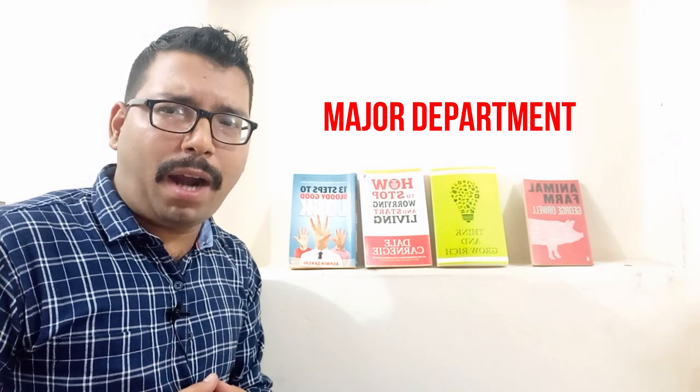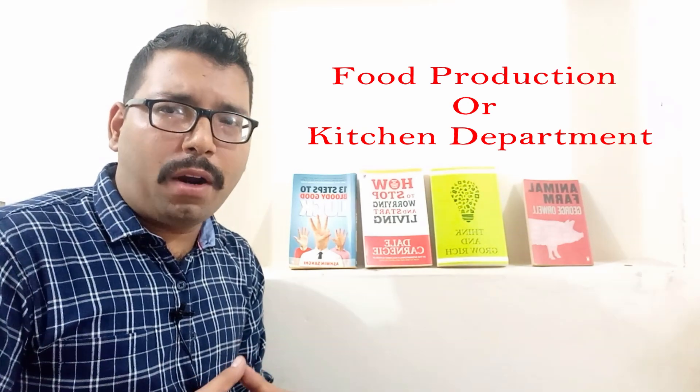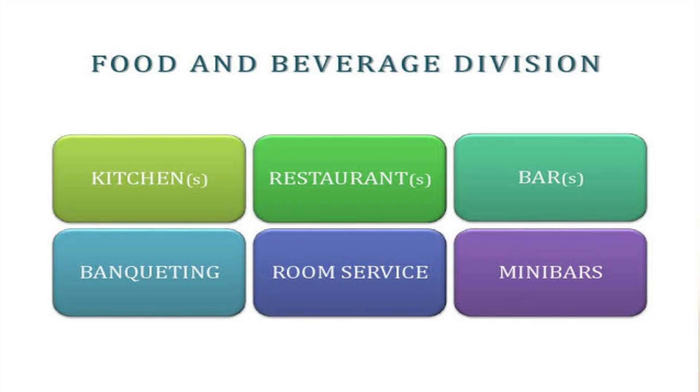Among the four major departments of a hotel, food production department is one. Food production department is normally also called the kitchen department. And if I broadly explain the term, food and beverage is also a separate department, under which FNB service comes, as well as food production.